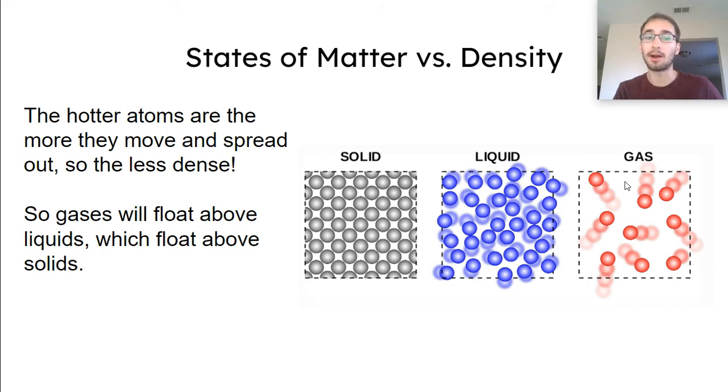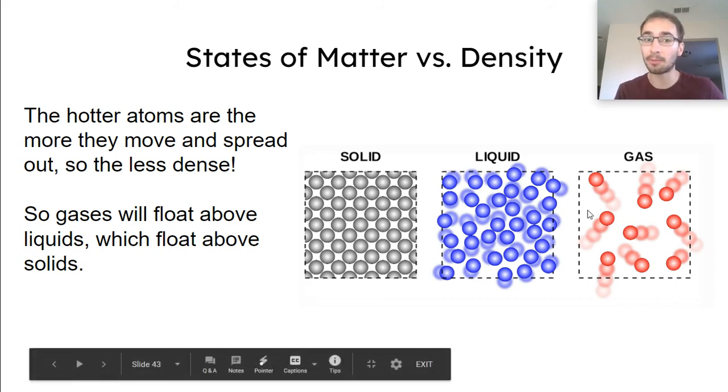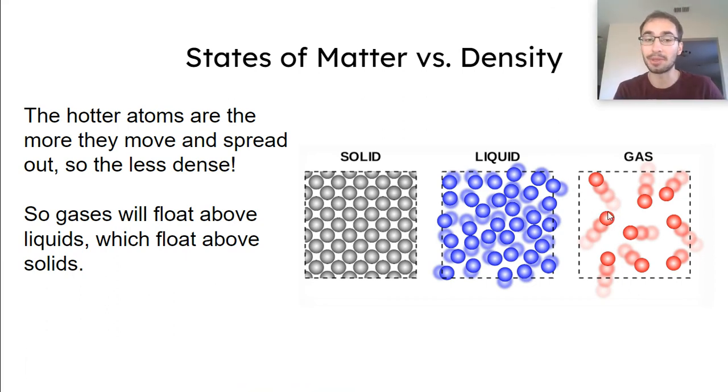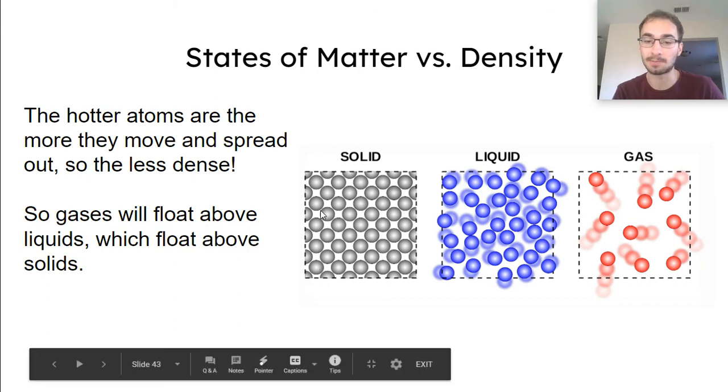You should have noticed, the hotter atoms are, the more they move, and then the more they'll end up spreading out. So gases, they're the most spread out. They will float above liquids, which are a little bit more condensed, and then the solids will be at the bottom, because they aren't spread out at all.